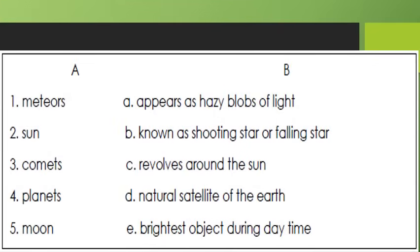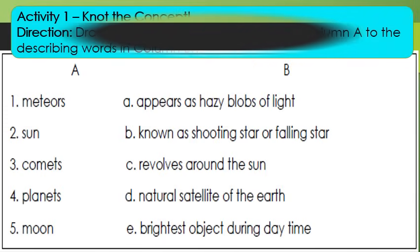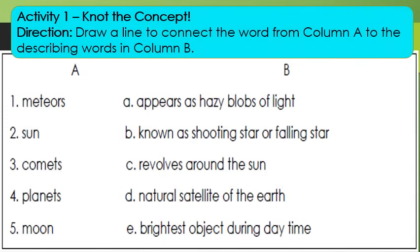Now, let's have some activities. Activity 1. Match the concept. Draw a line to connect the word from column A to the describing words in column B. Column A: Number 1. Meteors. 2. Sun. 3. Comets. 4. Planets. 5. Moon. Draw a line to connect the word from column A to the describing words in column B.